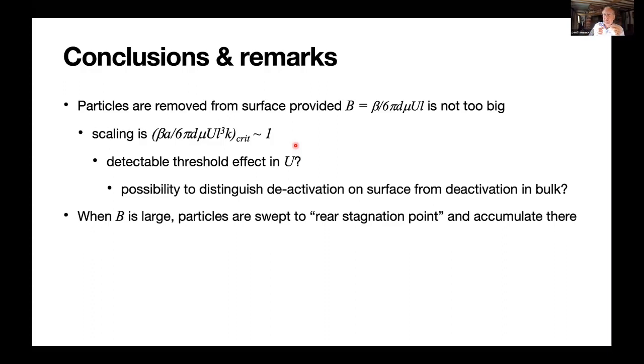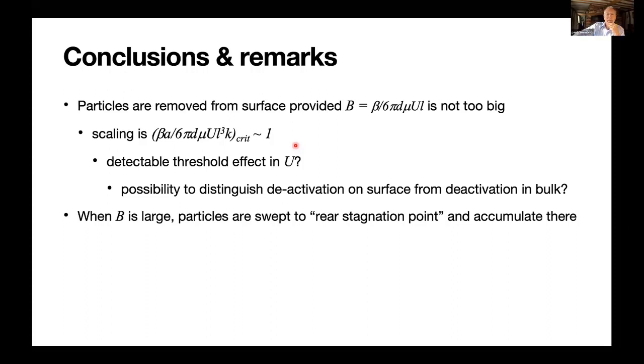When, within this model at least, when the attractions are strong, particles are swept towards the rear stagnation point and accumulate there. So rubbing your hands together, maybe it's a good thing, but equally you might be actually grouping deleterious material together, which will subsequently get removed. Maybe that's not always a good thing. That's what comes out of this little analysis. And the fact that Peclet number is large, meaning diffusive mixing is weak. That's quite surprising because it means getting surfactant in or surfactant off, say, a bar of soap that you're rubbing against your hand, maybe it's not so easy to get that really down into the nooks and crannies where it's needed.